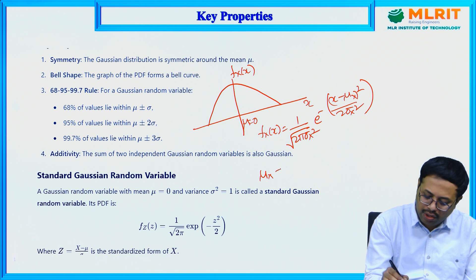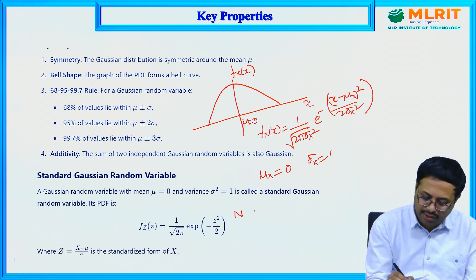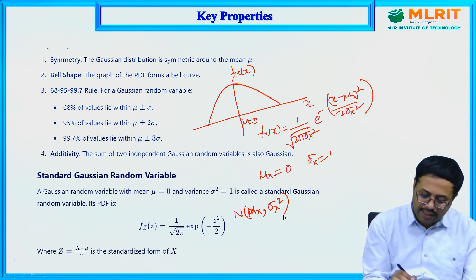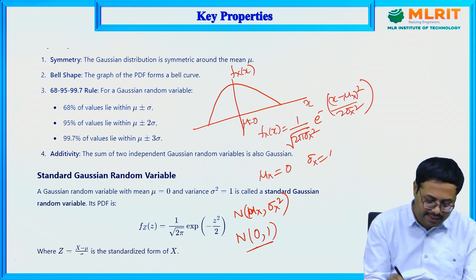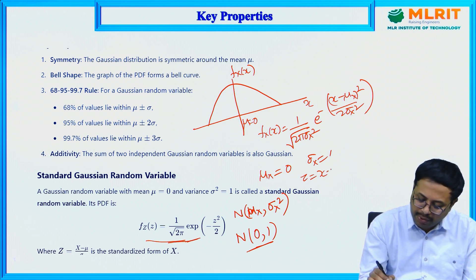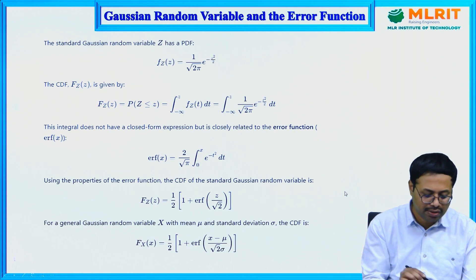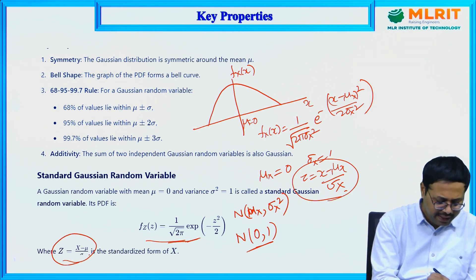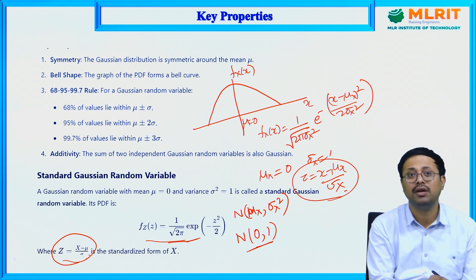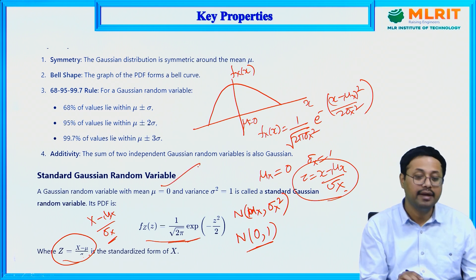When μ_x = 0 and σ_x = 1, the notation used is N(μ_x, σ_x²). The standardized variable is defined as z = (x − μ_x) / σ_x, also called the normalized value. Here x is the value of the random variable, μ is the mean, and σ_x is the standard deviation. This is the definition of the standard Gaussian random variable.